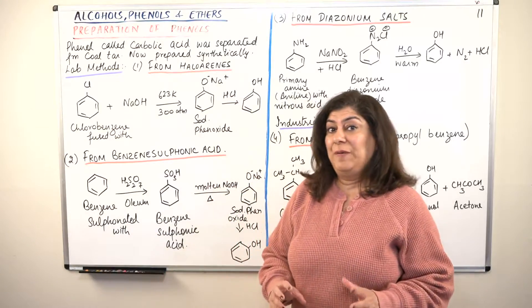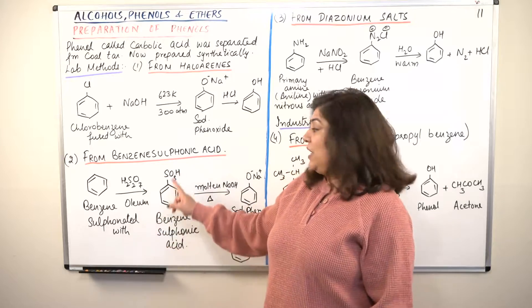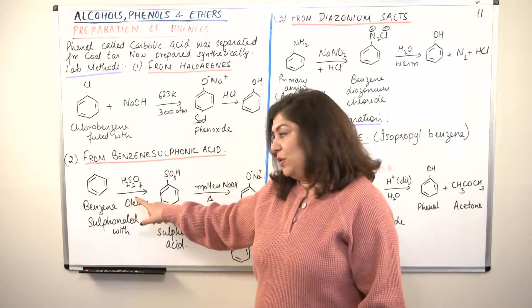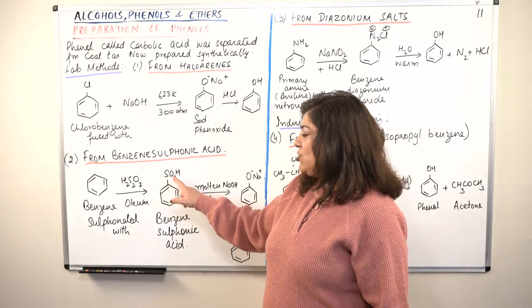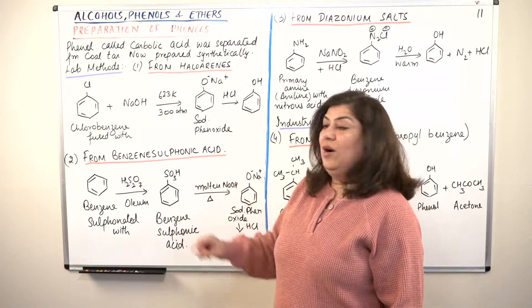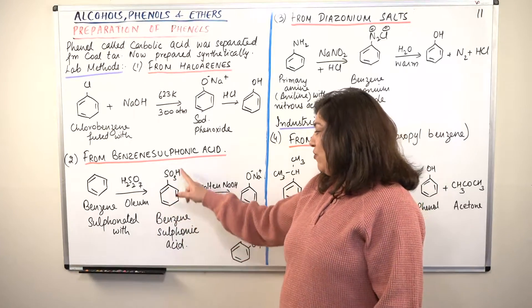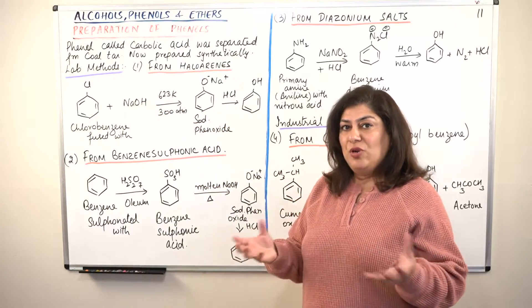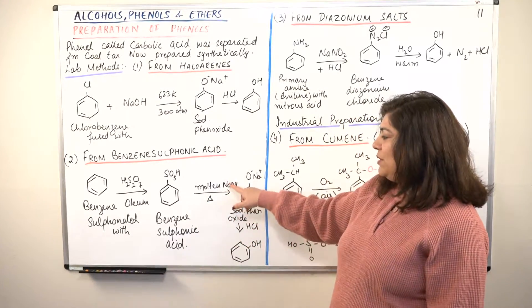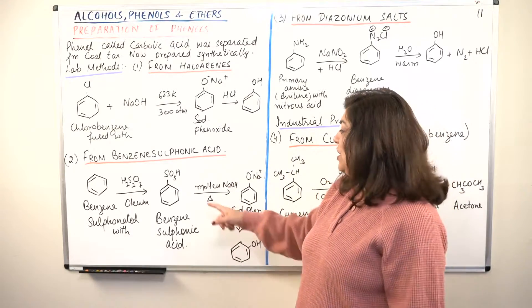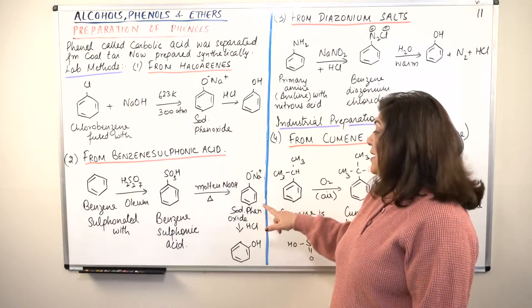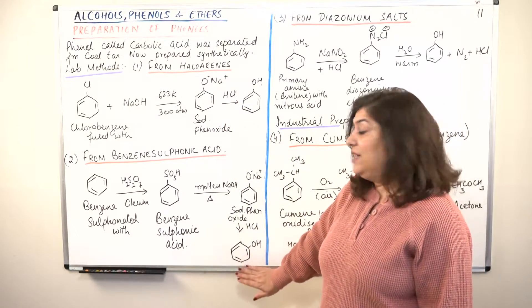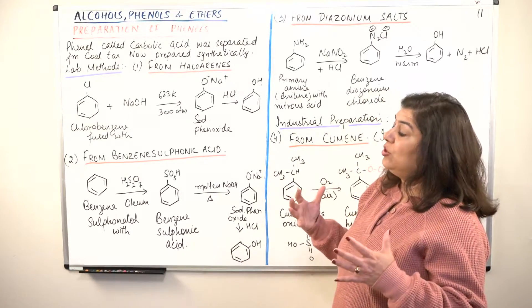So oleum is extremely strong dehydrated concentrated acid. When benzene is sulfonated, you get benzene sulfonic acid. Sulfonation of the benzene ring takes place. So when benzene reacts with oleum, it gives you benzene sulfonic acid - SO3H. Remember SO3H is the formula for the sulfonic acid group. When you make it react with molten sodium hydroxide, you're fusing it with sodium hydroxide and then you heat it. From benzene sulfonic acid you get sodium phenoxide. And as you know, when you get sodium phenoxide, the next step is acidification. When you acidify it, you get phenol.